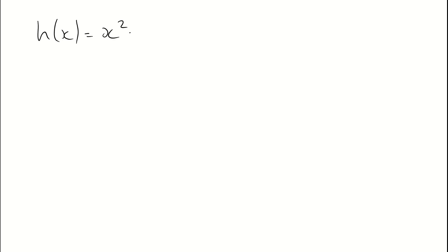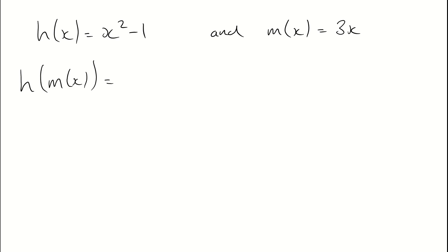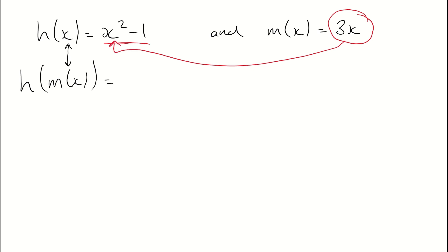Let's take a look at another example. We might be looking at h of x, which is equal to x squared minus 1, and m of x, which is equal to 3x. If I want to work out h of m of x, I look at my h of x function and instead of an x I've now got m of x, which is 3x. So everywhere I see an x, I take this 3x and pop it in there instead, ending up with 3x all squared minus 1, which is 9x squared minus 1.